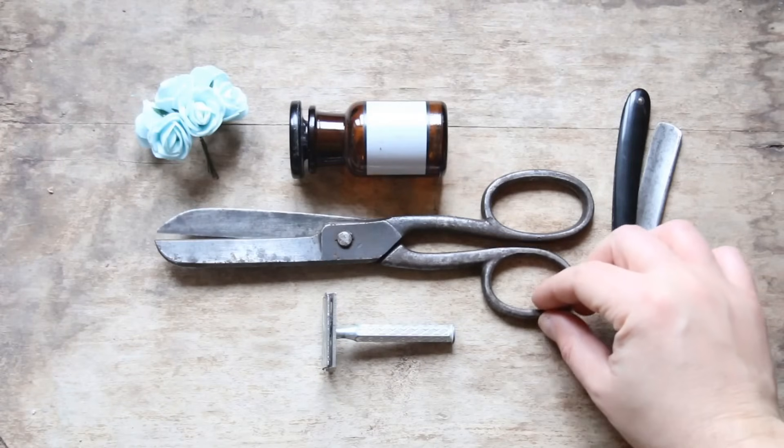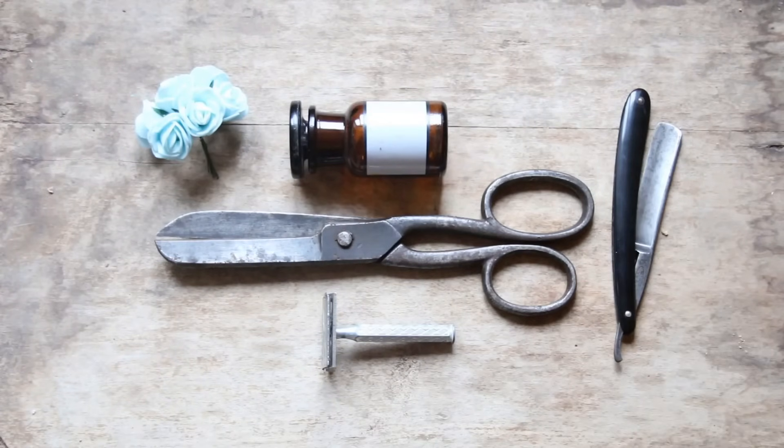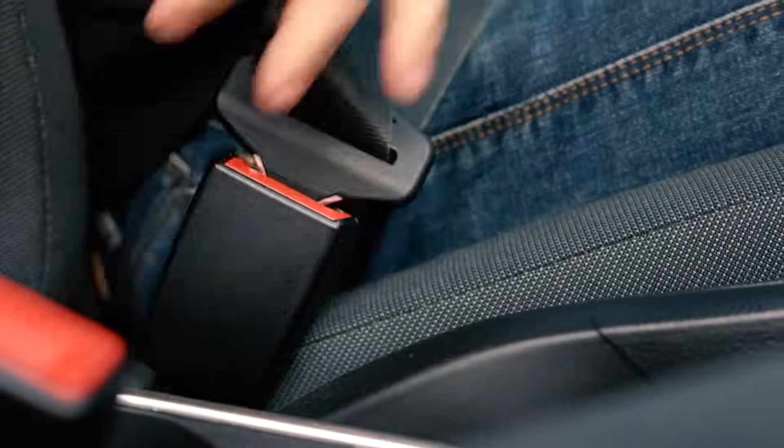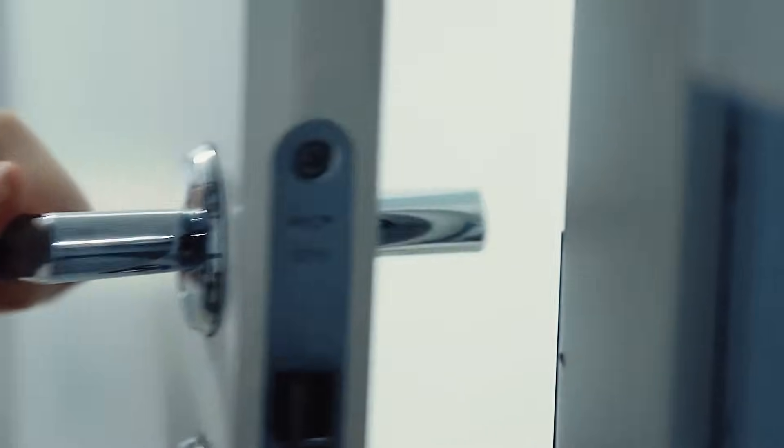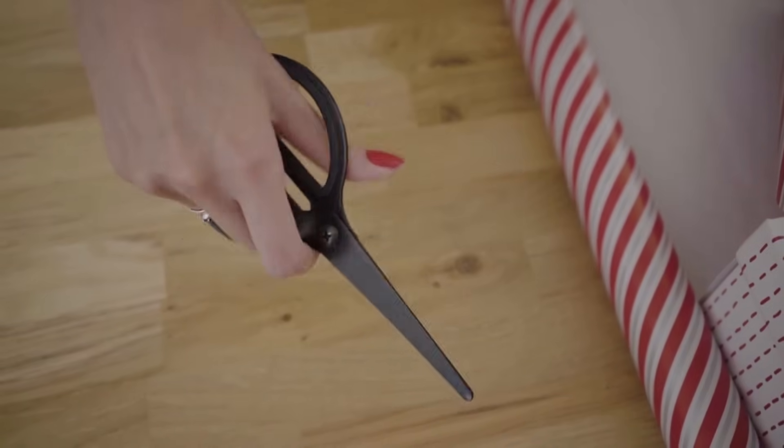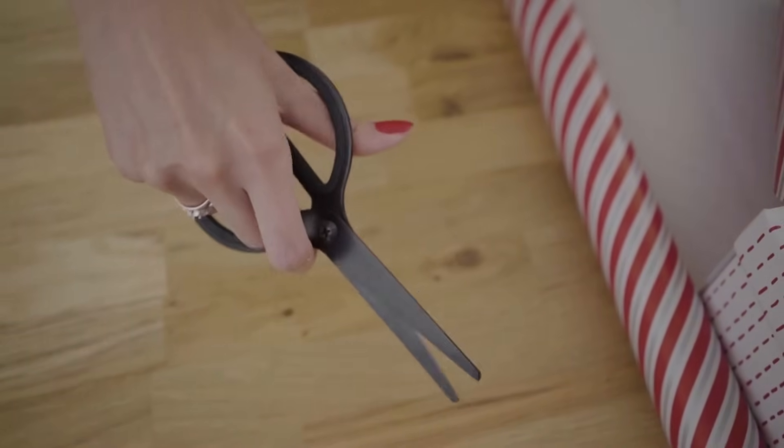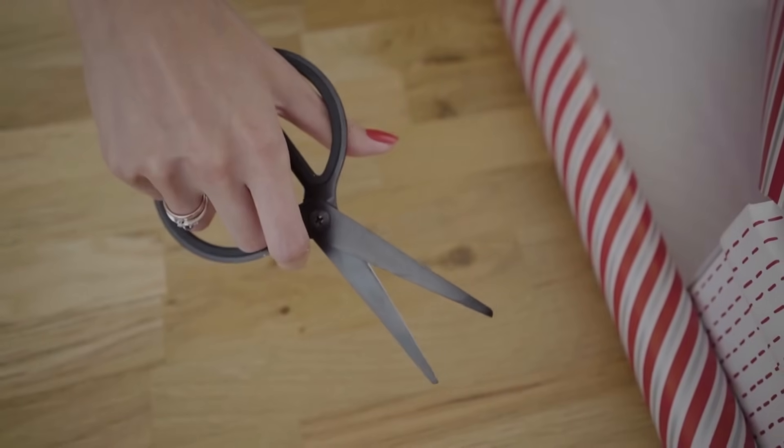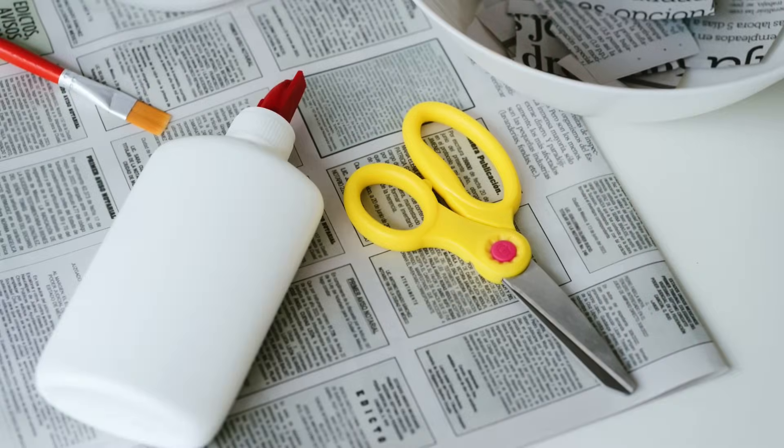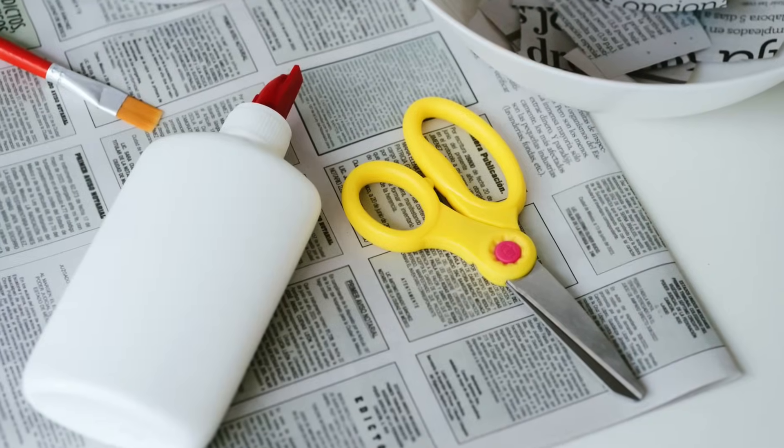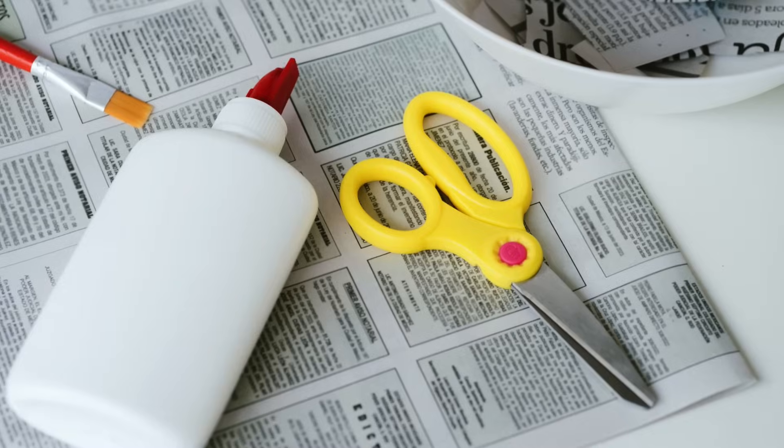It's funny how much of good design hides in plain sight. The things that feel so simple, like the click of a seatbelt or the shape of a door handle, often carry with them layers of thought, history and adaptation. Scissors are no different. That big loop isn't an afterthought. It's a well-engineered solution that's been molded, quite literally, around the human hand.